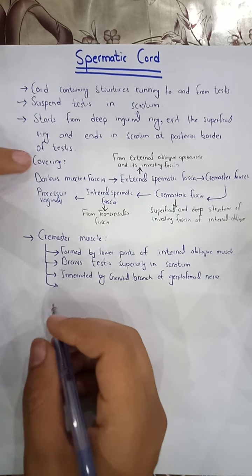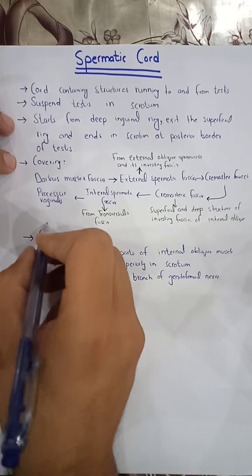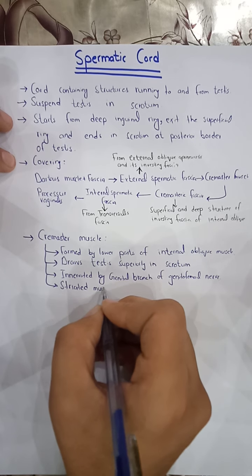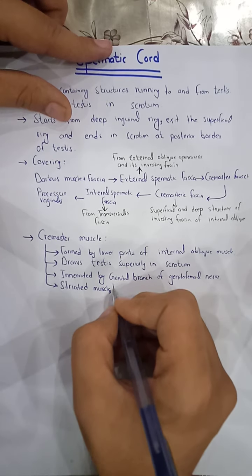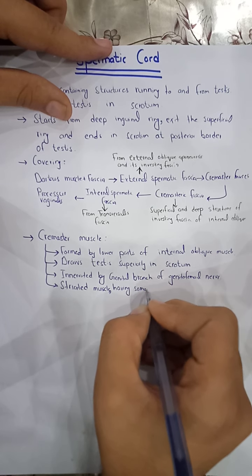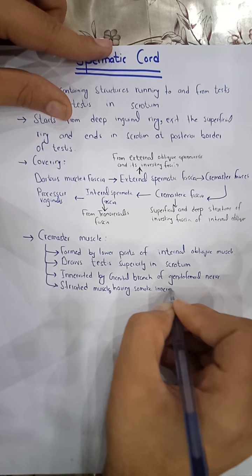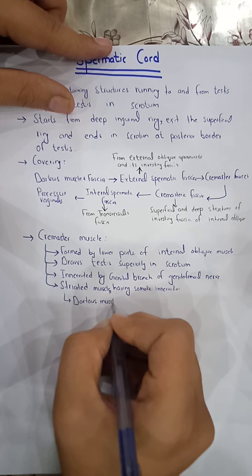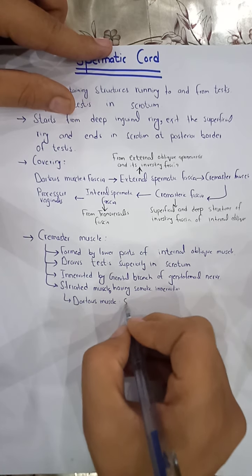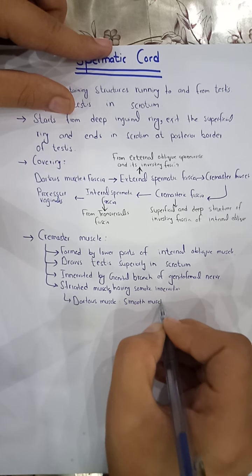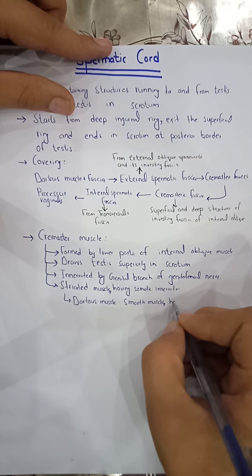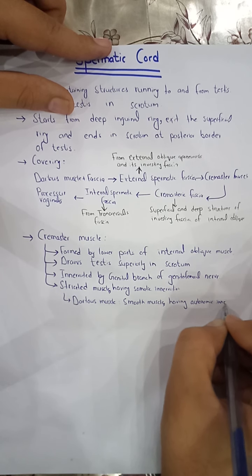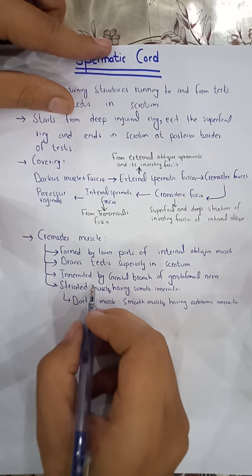An important distinction: the cremaster muscle is striated muscle, similar to the skeletal muscle, so it has somatic innervation. However, the dartos muscle is smooth muscle and has autonomic innervation.